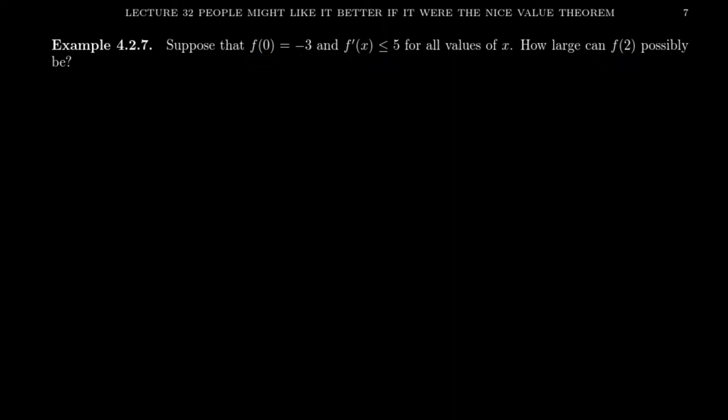How large could f of 2 possibly be under these assumptions? Let's go to the mean value theorem. First notice that by assumption, f is differentiable. So f prime of x is less than or equal 5 for all values x. That also implies it's continuous for all of these numbers. Those are the assumptions we need for the mean value theorem.